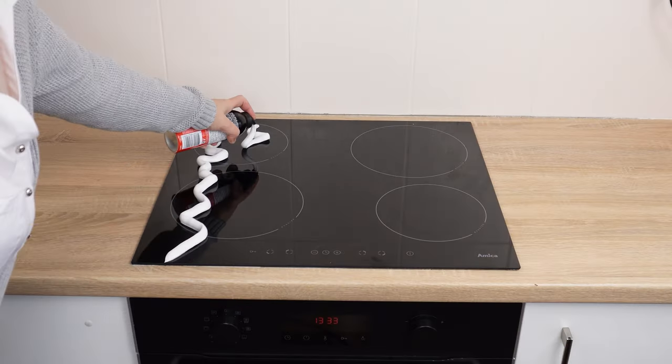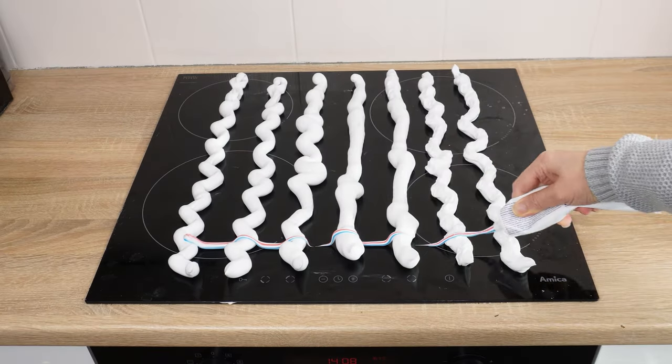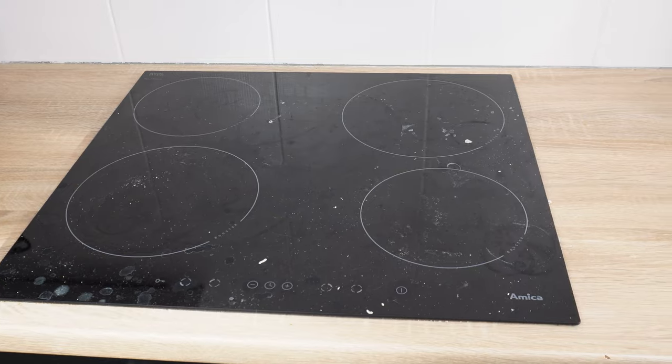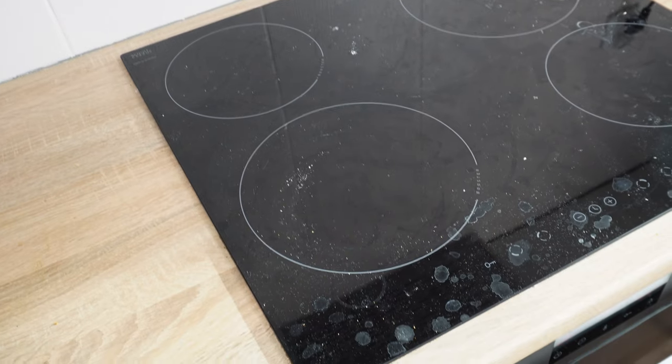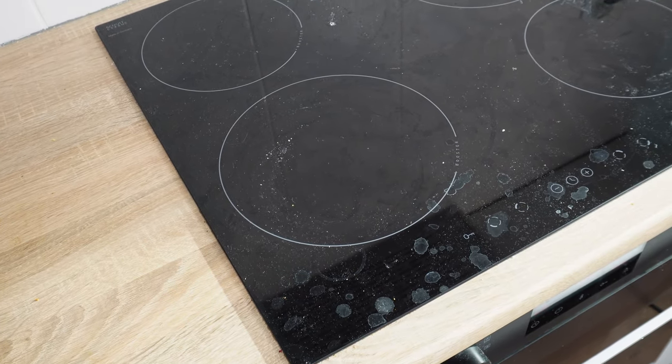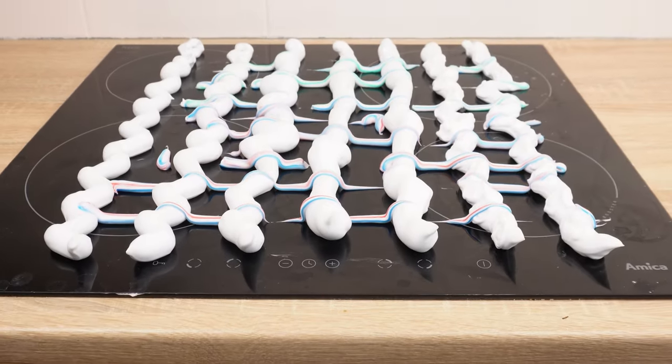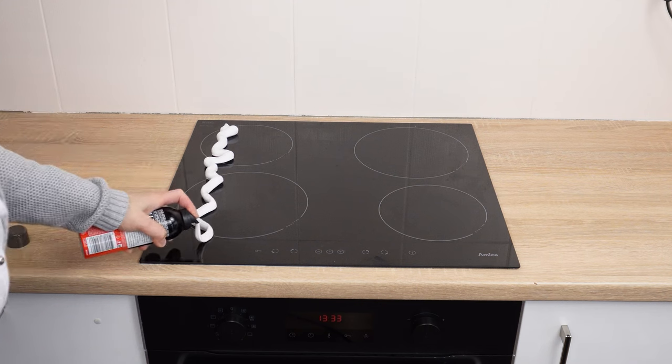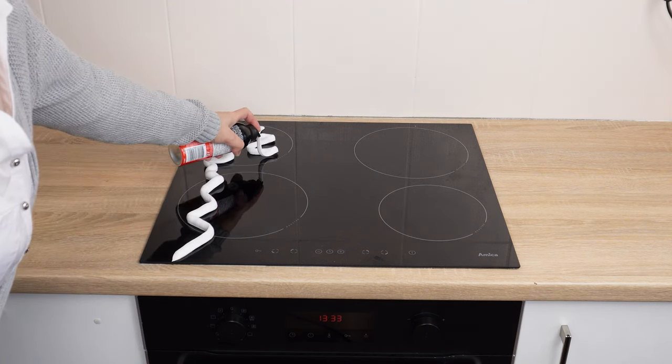Apply it to the induction hob. It'll be as good as new without scrubbing. When the induction hob is dirty, there's a simple solution. Stains, streaks, and even burnt spots will disappear as if by magic. Just use two products that you surely have in your bathroom. Take shaving foam and apply it to the induction hob. A few strips are enough.